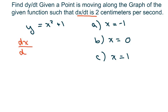So we know that the derivative of X with respect to T is 2, and we just need to find the derivative of Y with respect to T.